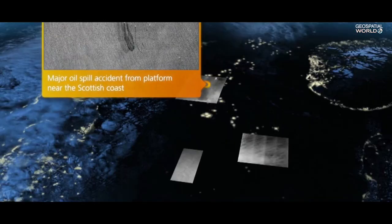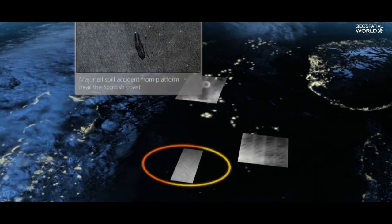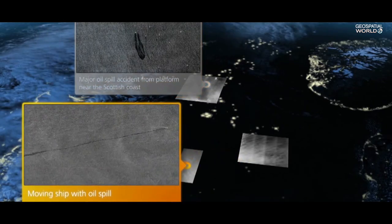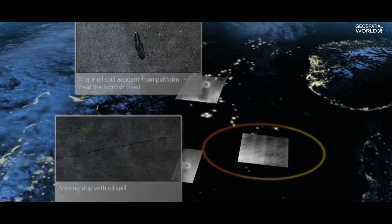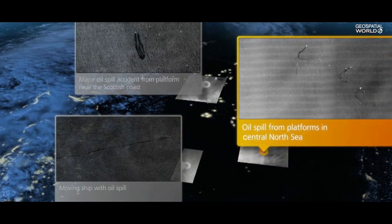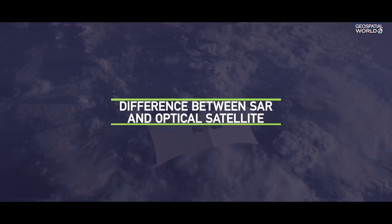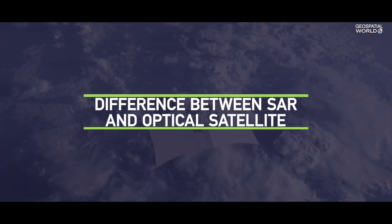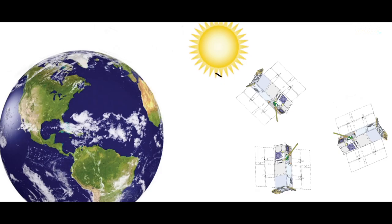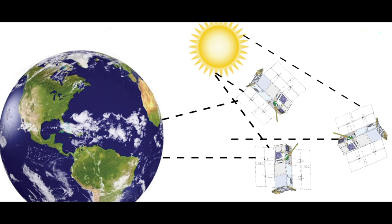That allows the satellite to measure primarily man-made objects, but also other very highly reflective types of features on the ground. Optical satellites use the Sun's energy that reflects off the earth's surface and collects that energy.